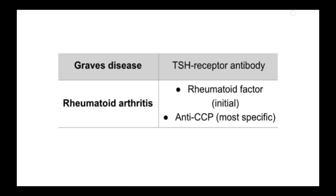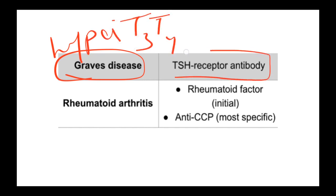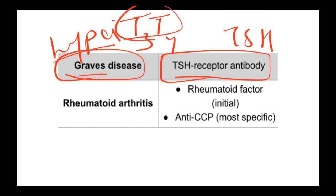Graves' disease is associated with hyperthyroidism — elevated T3, T4, and all of that. The antibodies are against TSH receptors. Graves' equals thyroid, hyperthyroidism — so TSH receptor antibodies.